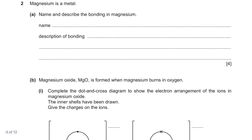Question 2. Magnesium is a metal. Part a: name and describe the bonding in magnesium. It's metallic bonding. In a metallic bond, there is a sea of electrons floating around positive ions, and there is a strong attraction between the electrons and the positive ions.